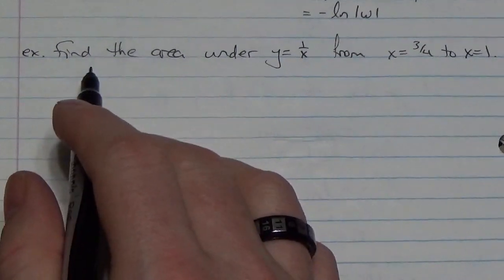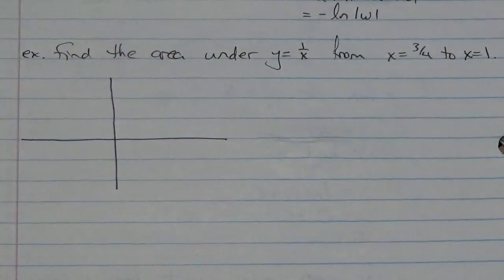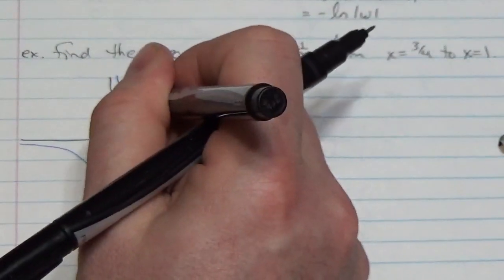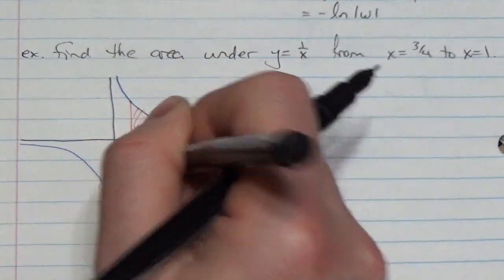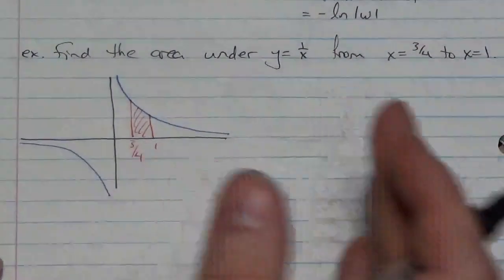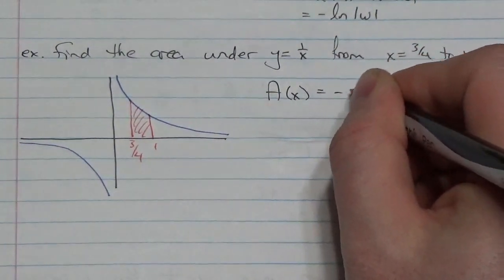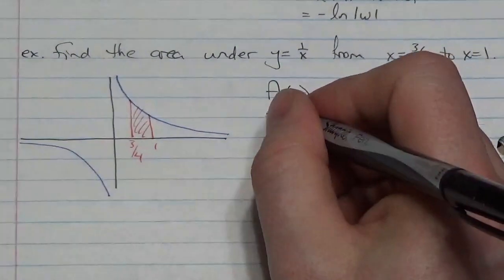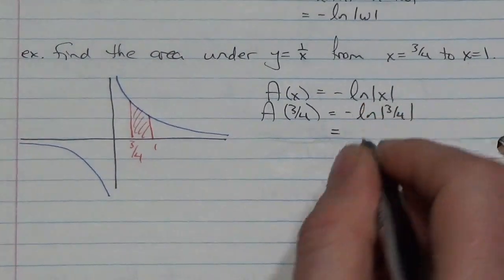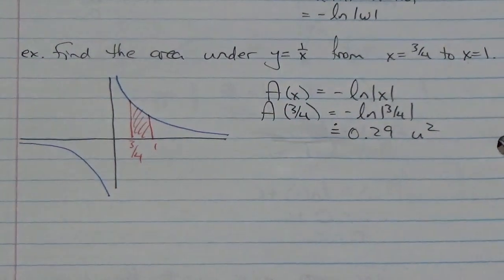Let's look at another example: find the area under y equals 1 over x from x equals 3 quarters to 1. This is the same sort of problem we just looked at. We know the area from some value up to 1 is the negative natural log of that value. So the area from 3 quarters to 1 is the negative natural log of 3 quarters, which is approximately 0.29 units squared.